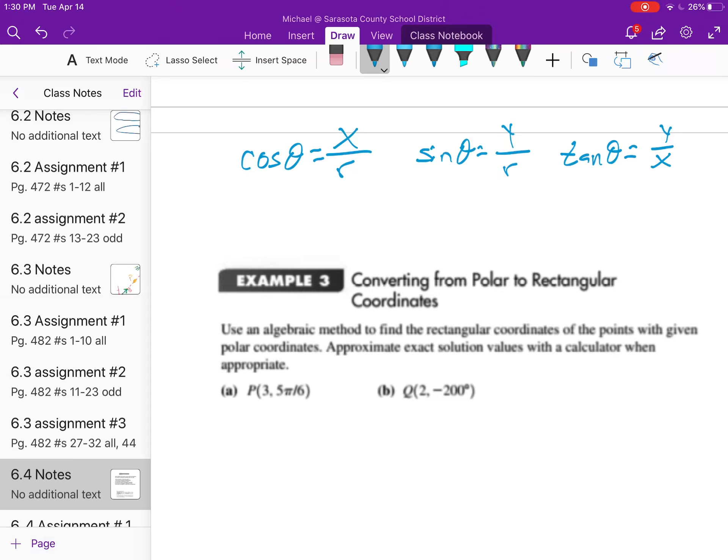If you go back a couple of videos, in both of these equations for cosine and sine, if I multiply both sides by r, that would cancel on the right hand side, and I would get that r times the cosine of theta equals x. If I did the same thing with the sine equation, I would get that r times the sine of theta equals y. These are our two critical formulas for converting from polar coordinates to rectangular coordinates.